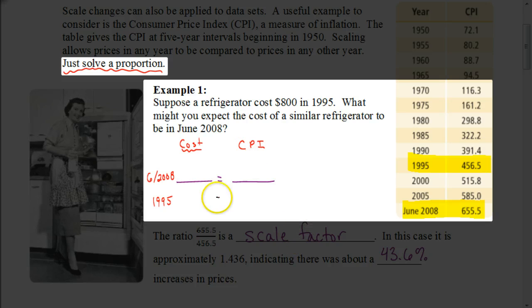Now, let's put the numbers in this ratio. We don't know the cost of the refrigerator in June of 2008. That's what we're trying to find out. But we know that this refrigerator cost $800 in 1995. And we can look over here at what I highlighted for our CPI, that in June of 2008, our CPI is 655.5. And in 1995, our CPI is 456.5.